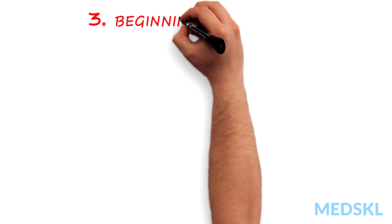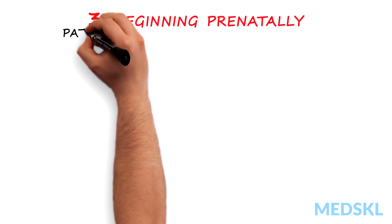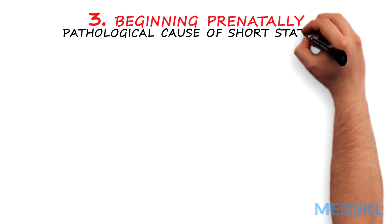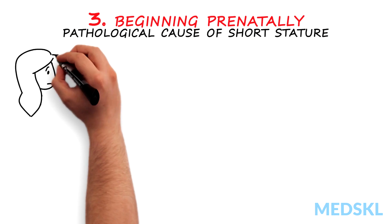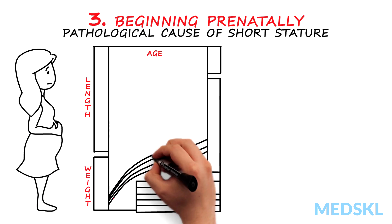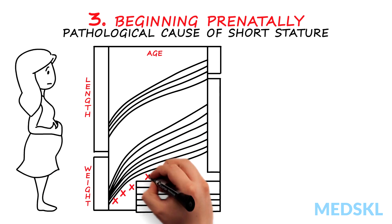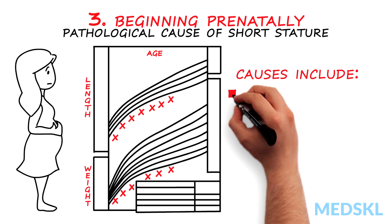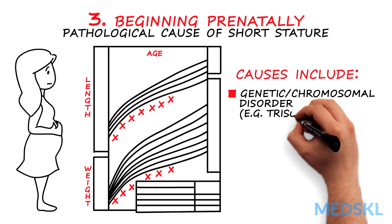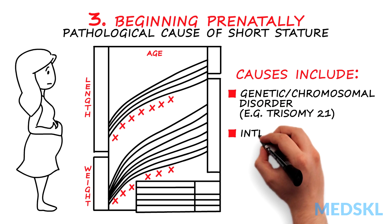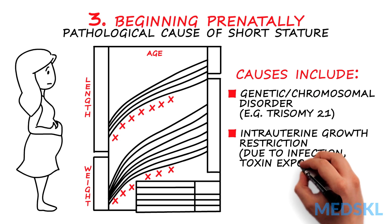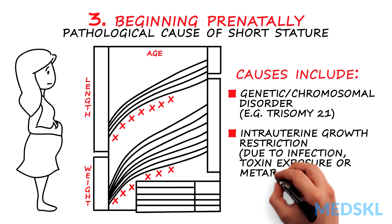The third pattern shows pathologic short stature beginning prenatally, and this is a pathologic form of short stature that requires investigation. Short stature that begins prenatally can have causes including a genetic or chromosomal disorder such as trisomy 21, or can result from intrauterine growth restriction due to infection, toxin exposure, or metabolic disease.